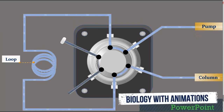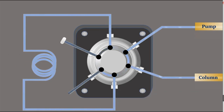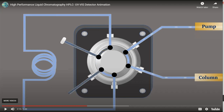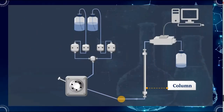After injection, the valve returns to the load position and the mobile phase moves the sample through the column. After injecting 2–3 microliters of sample, you must wait approximately 30 seconds, then change the knob back to normal. The pump then delivers directly to the column again. This is the mechanism of sample loading.